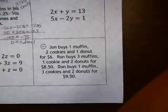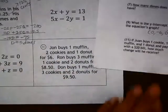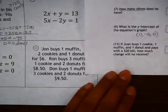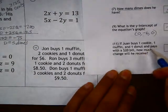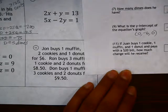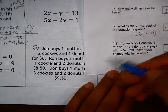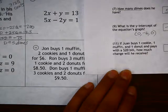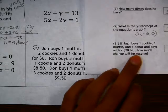Here we're given some information, and the question we're being asked to find is, if Juan buys one cookie, one muffin, and one donut and pays with a $20 bill, how much change will he receive? So in order to answer this question, we need to figure out how much a cookie, a muffin, and a donut cost, so that we can find out what his total bill was.